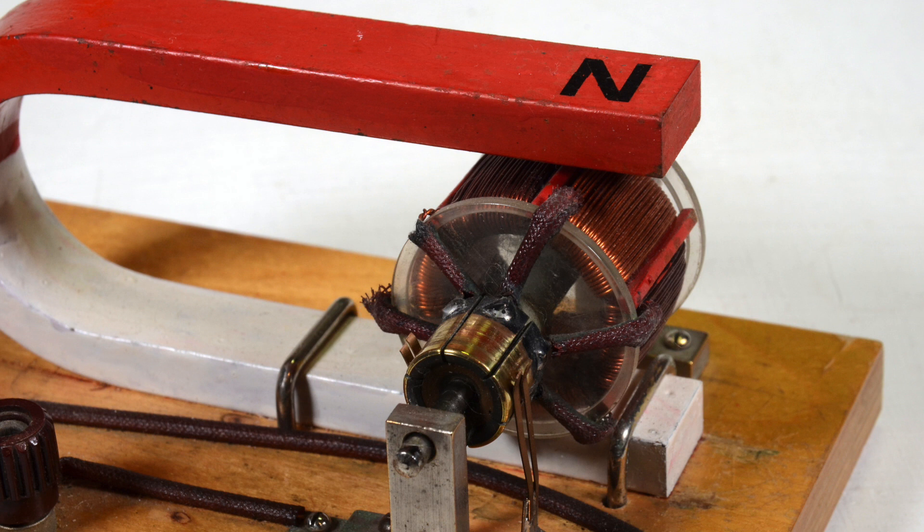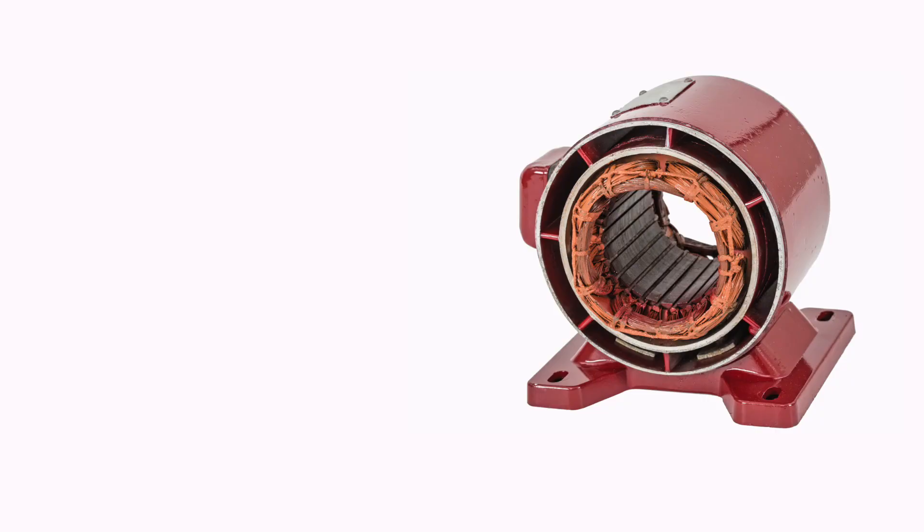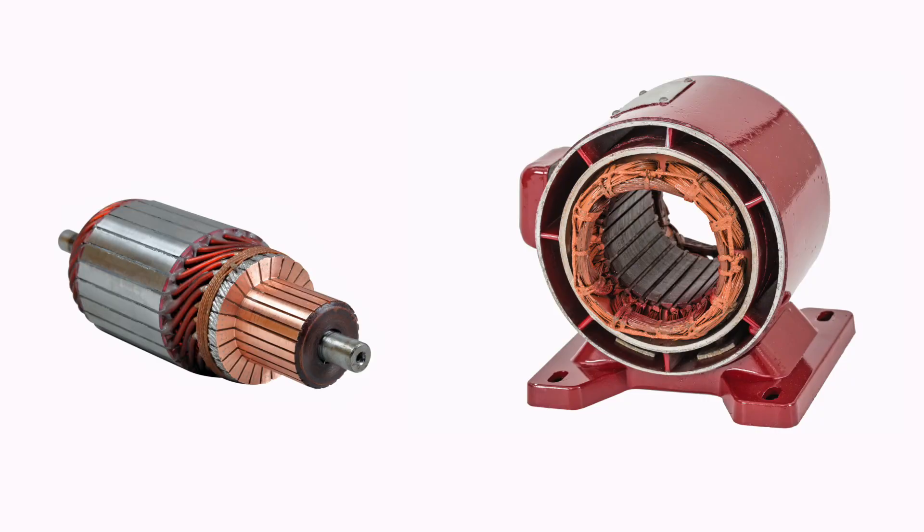Permanent Magnet DC motors, PMDCs, use a permanent magnet to create a magnetic field required for the operation of a DC motor. These motors are composed of two parts, the stator, which is the outside housing, and an armature, which consists of coils of wire wound in slots in an iron core and connected to a commutator.